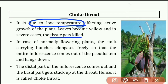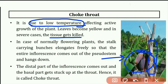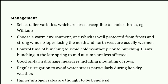In normally flowering plants, the stalk carrying bunches elongates freely so that the entire inflorescence comes out of the pseudostem and hangs down. The distal part of the inflorescence comes out, but the basal part gets stuck up in the throat — hence it is called choked throat disorder.